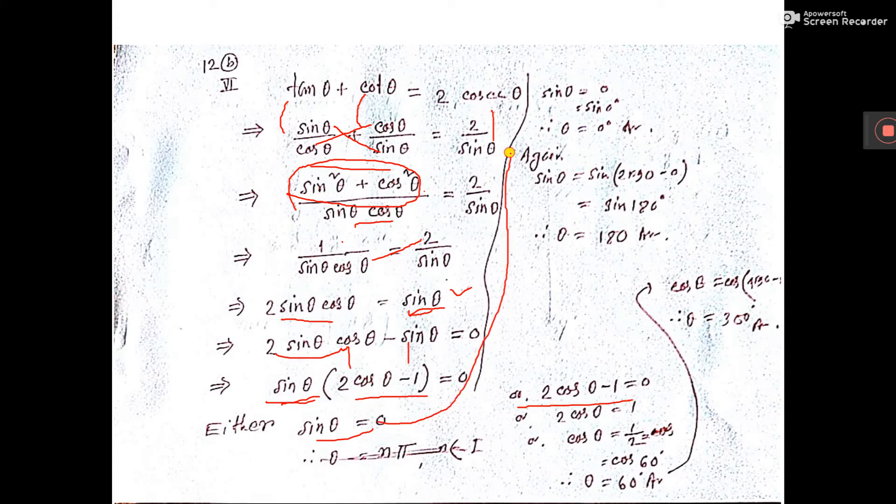So this sin theta equal to 0 I have taken here. 0 means what, sin 0 degree. Sin sin cancel, so theta is equal to 0 degree you are getting. Again you can write sin theta equal to sin 2 into 90 minus 0.